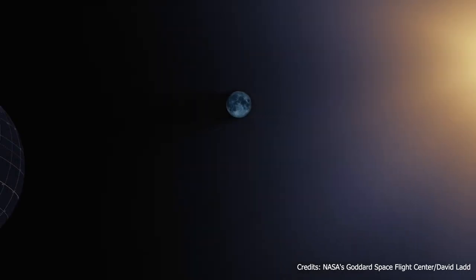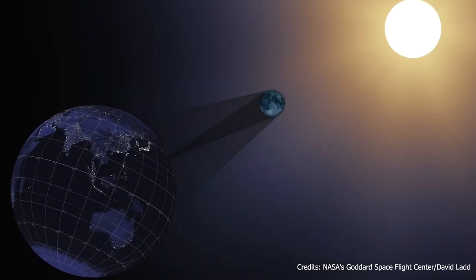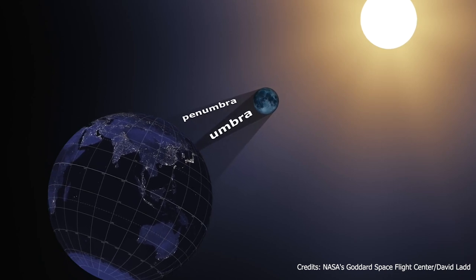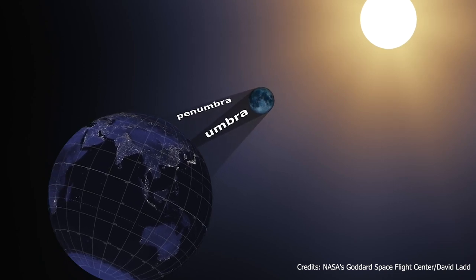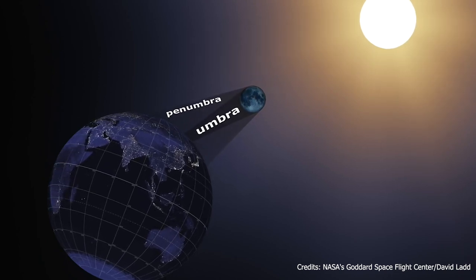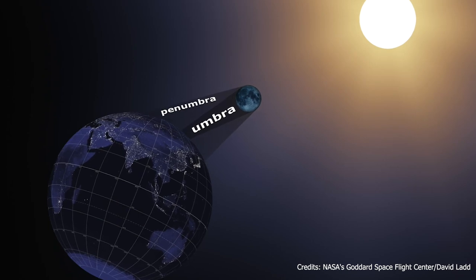During a solar eclipse, the Moon casts two shadows onto the Earth: the Umbra and Penumbra. Depending on the type of shadow you're standing in, you'll see different types of solar eclipses.